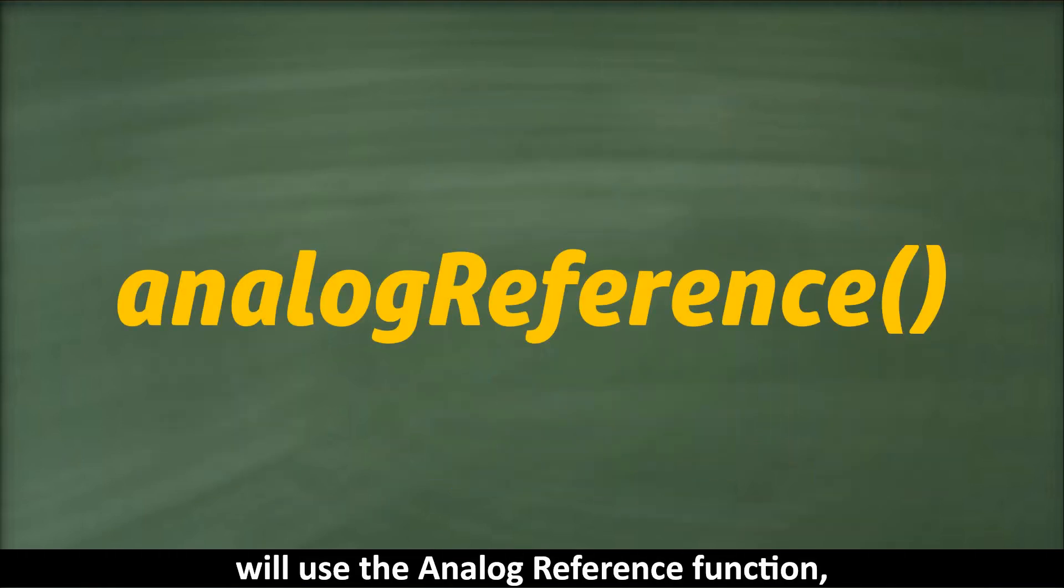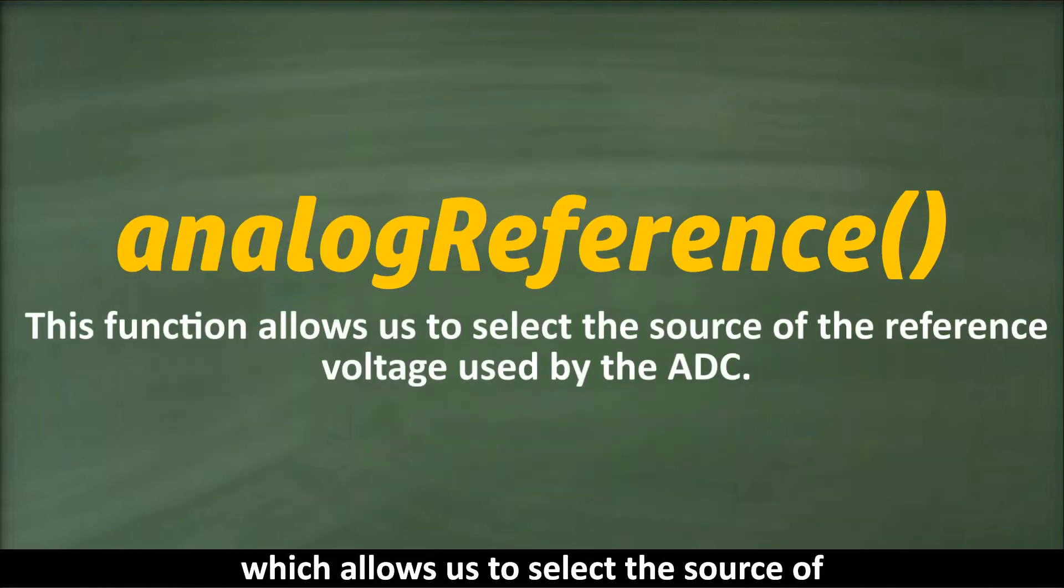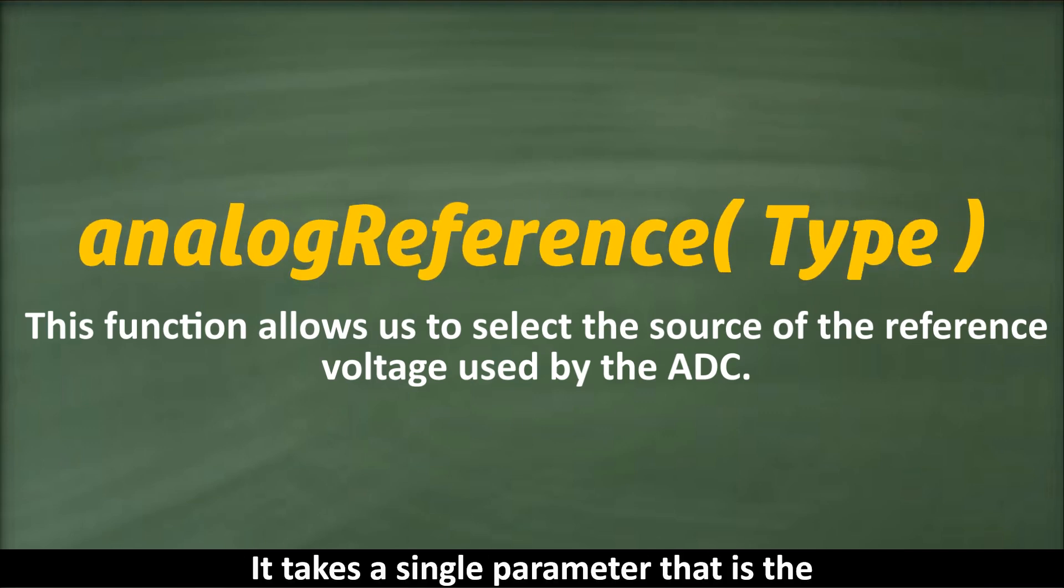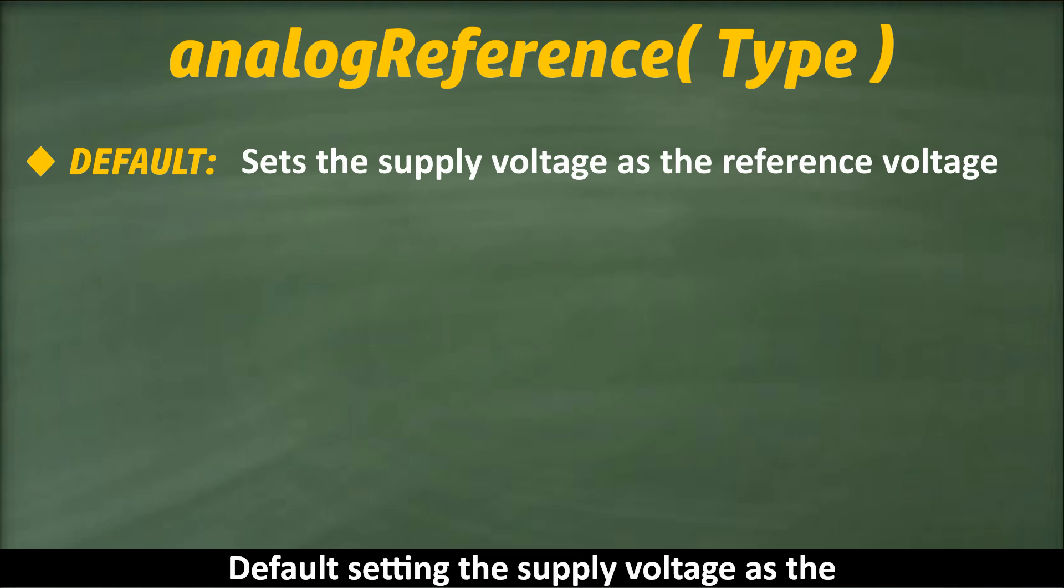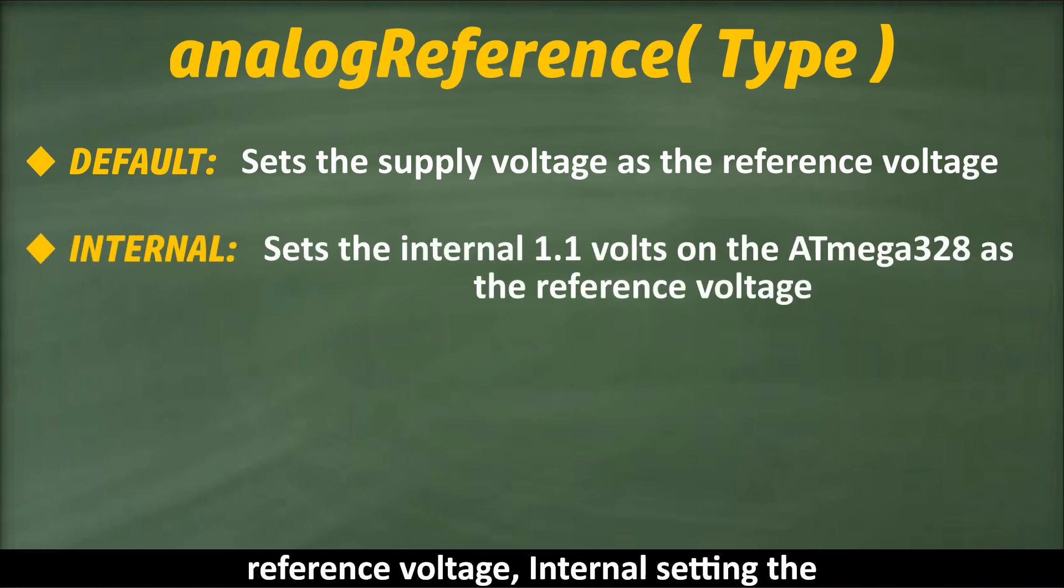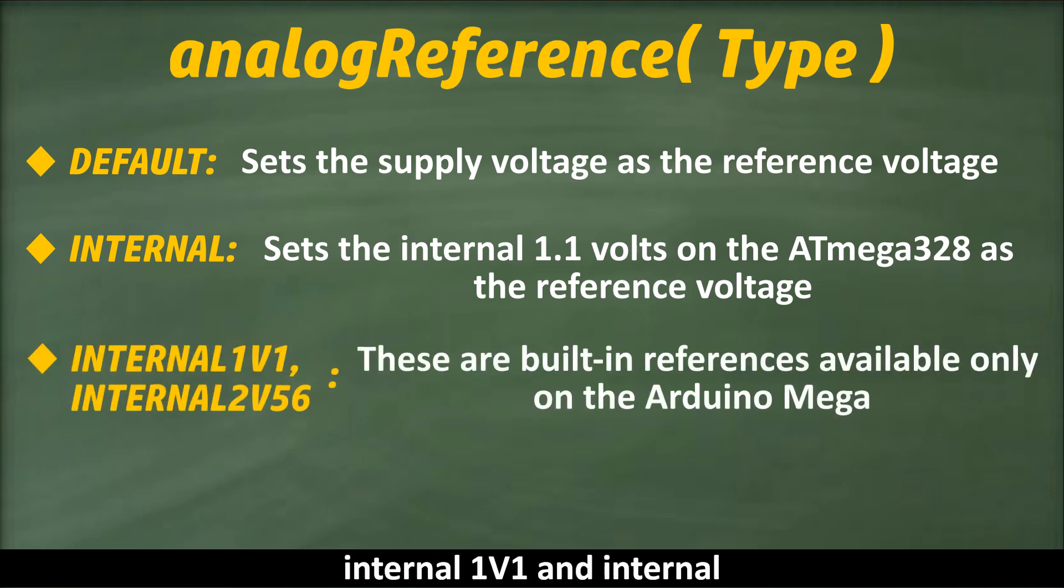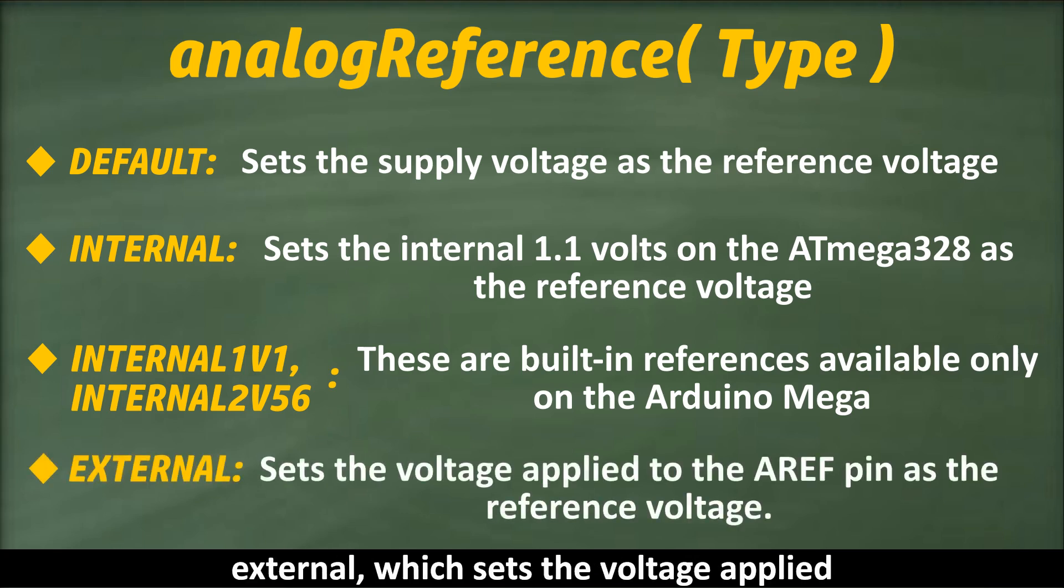So for this, we will use the analogReference function, which allows us to select the source of the reference voltage used by the ADC. It takes a single parameter that is the type of reference voltage used by the ADC. Valid values for this parameter are Default, setting the supply voltage as the reference voltage. Internal, setting the internal 1.1 volts on the ATmega328 as the reference voltage. Internal1v1 and Internal2v56, which are built-in references available only on the Arduino Mega. And External, which sets the voltage applied to the AREF pin as the reference voltage.